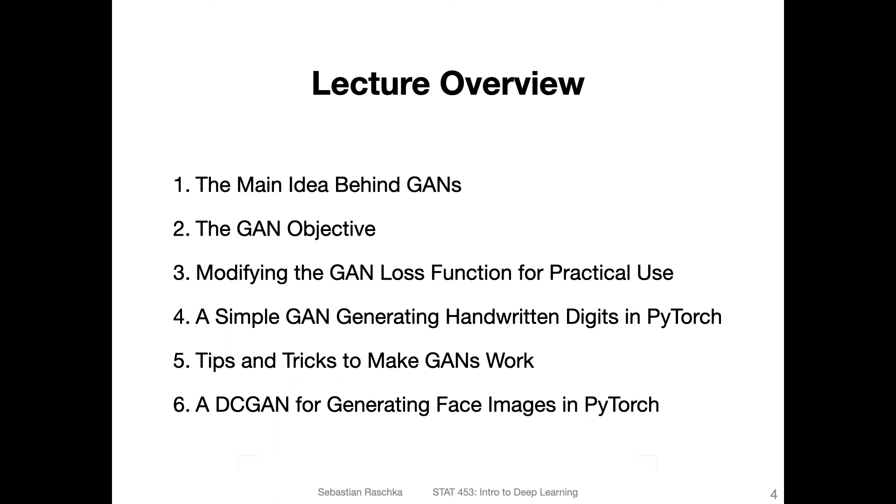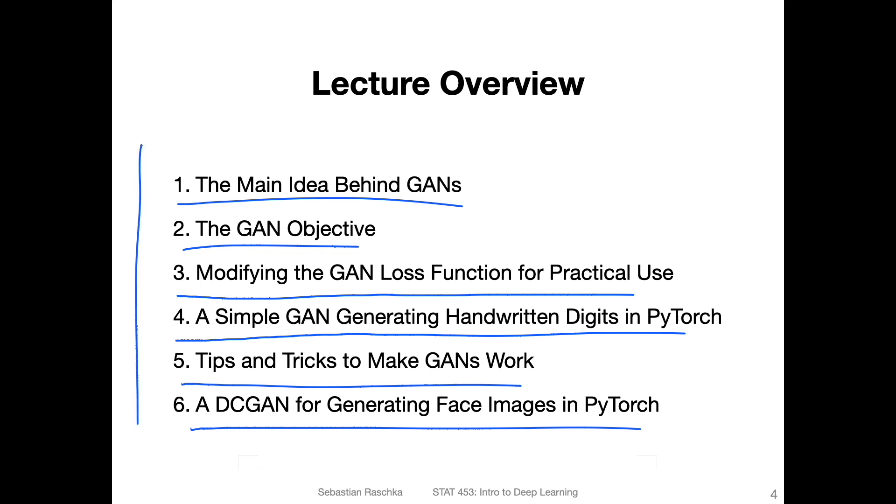So the lecture overview for today is as follows. I will first give you the big picture behind GANs, then we will talk a little bit about the objective, so the loss function, like it was presented in the original paper. And then we'll talk about a little modification that makes it a little bit more practical when we are training it regarding the gradients. And then I will show you an example how we can train a neural network, like a fully connected GAN, for handwritten digits. And then I will go over some tips and tricks for making GANs work, because GANs are really, really tricky. And even with these tricks and tips, it's still hard to train GANs. And I will show you a DC GAN for generating face images, which I spent a lot of hours on because, like I said, GANs can be fun but also tricky. So these are our topics for today, starting in the next video with the main idea.